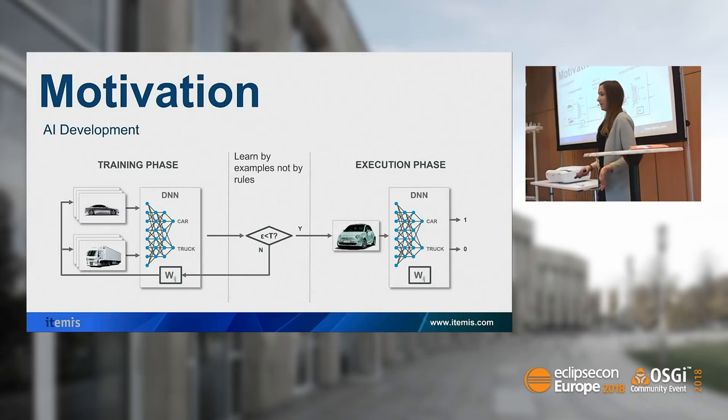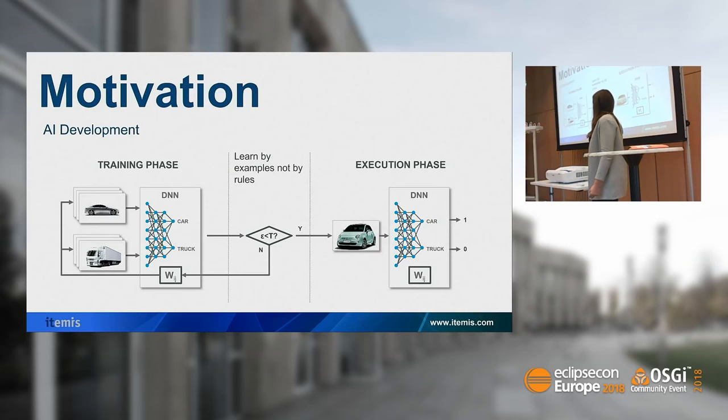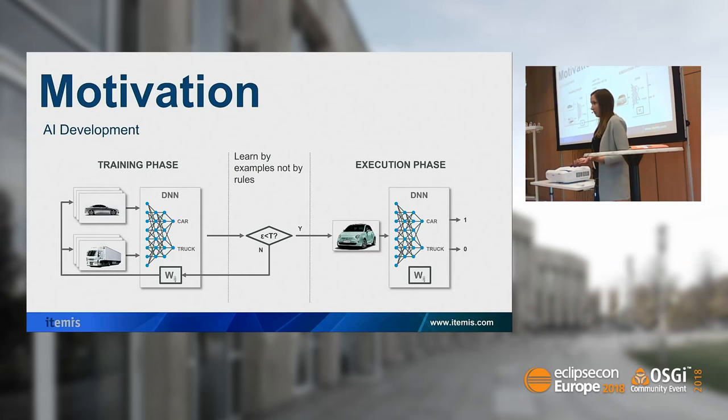This means that you have a training phase in which you define a model architecture, and you need a huge set of examples. For example, if you would like to predict whether the object you're facing is a truck or a car, you need a huge amount of images of cars and trucks. In this training phase, the model learns by itself how it makes its decisions in the future and defines its weights on its own.